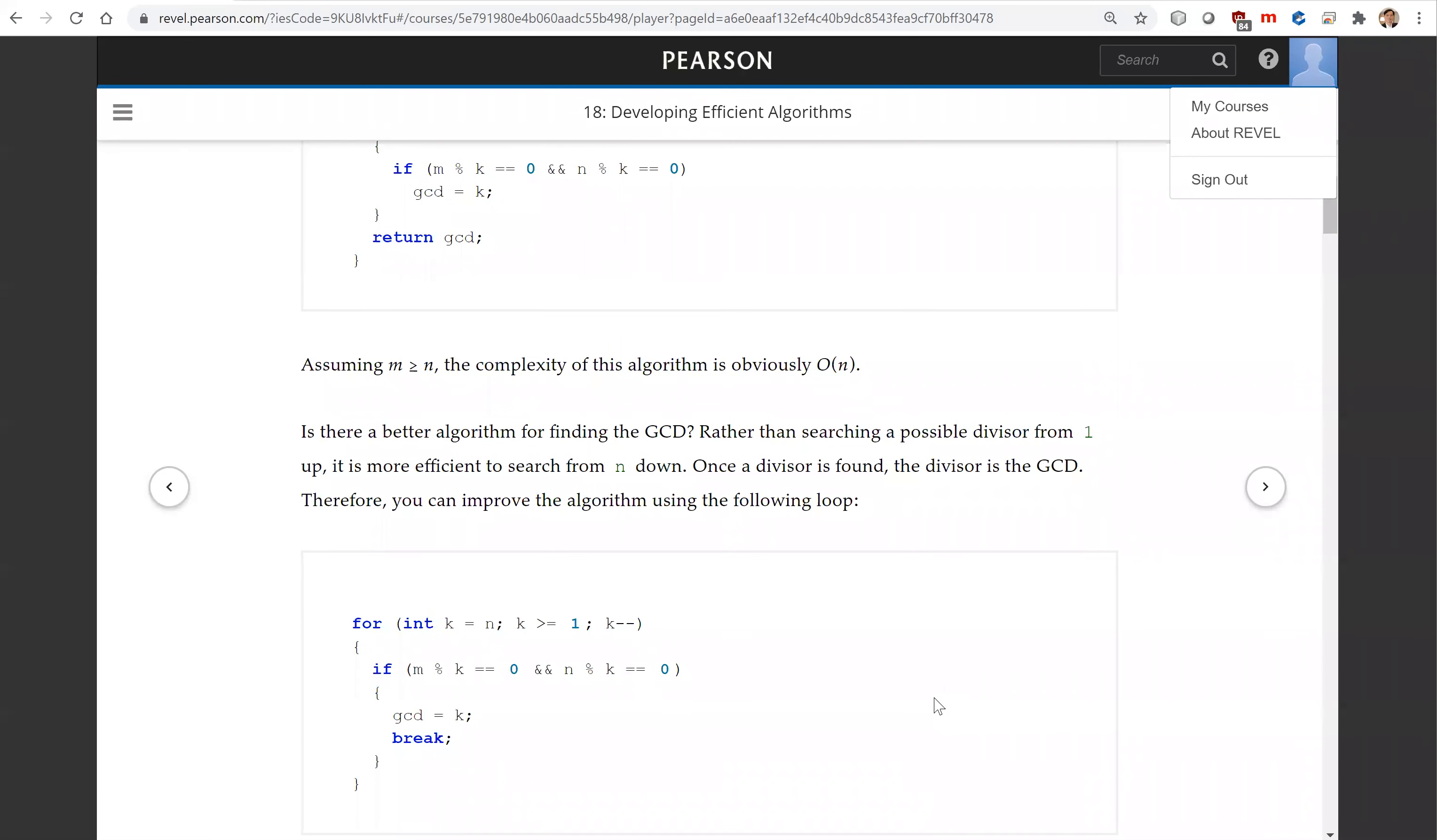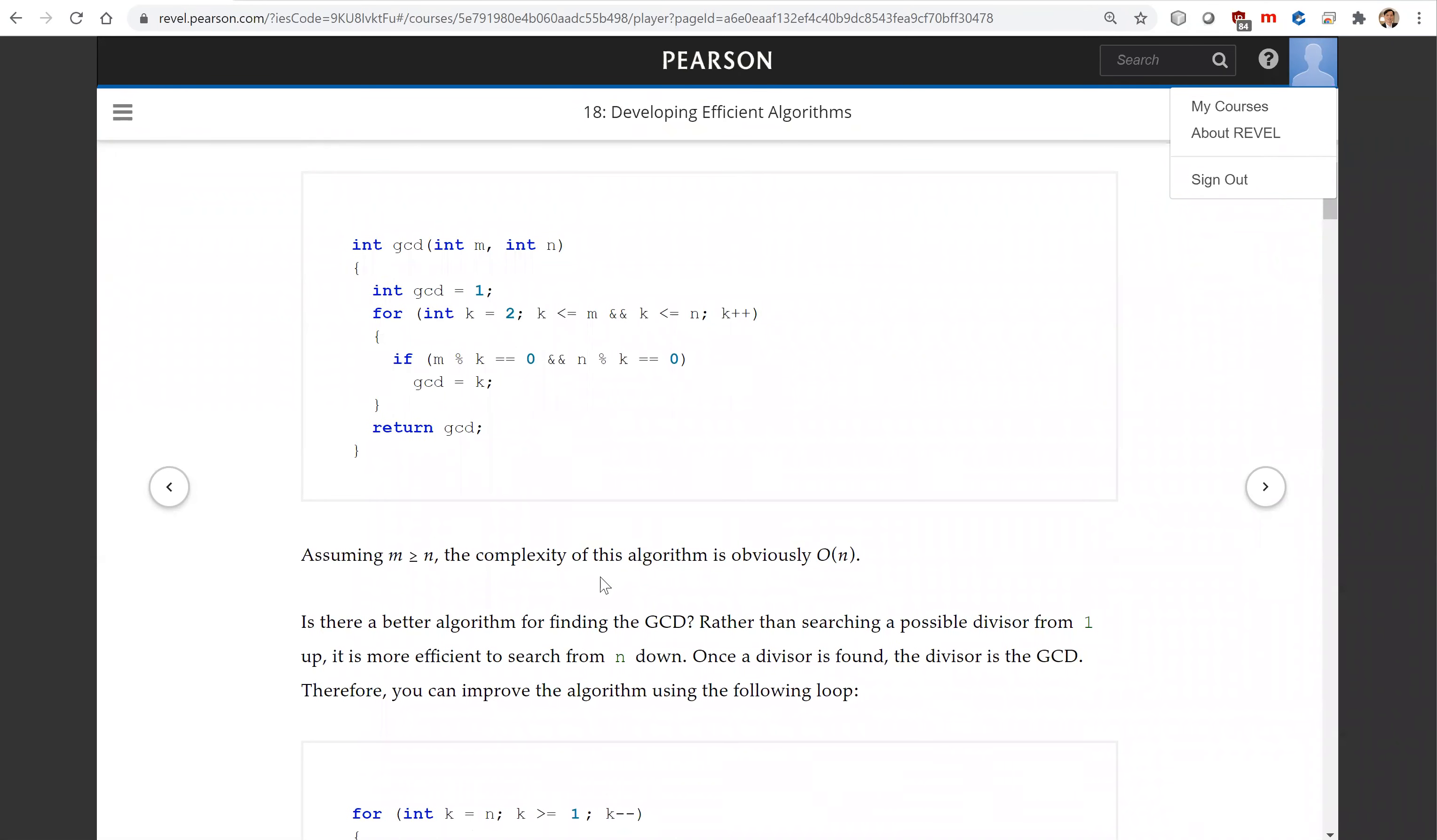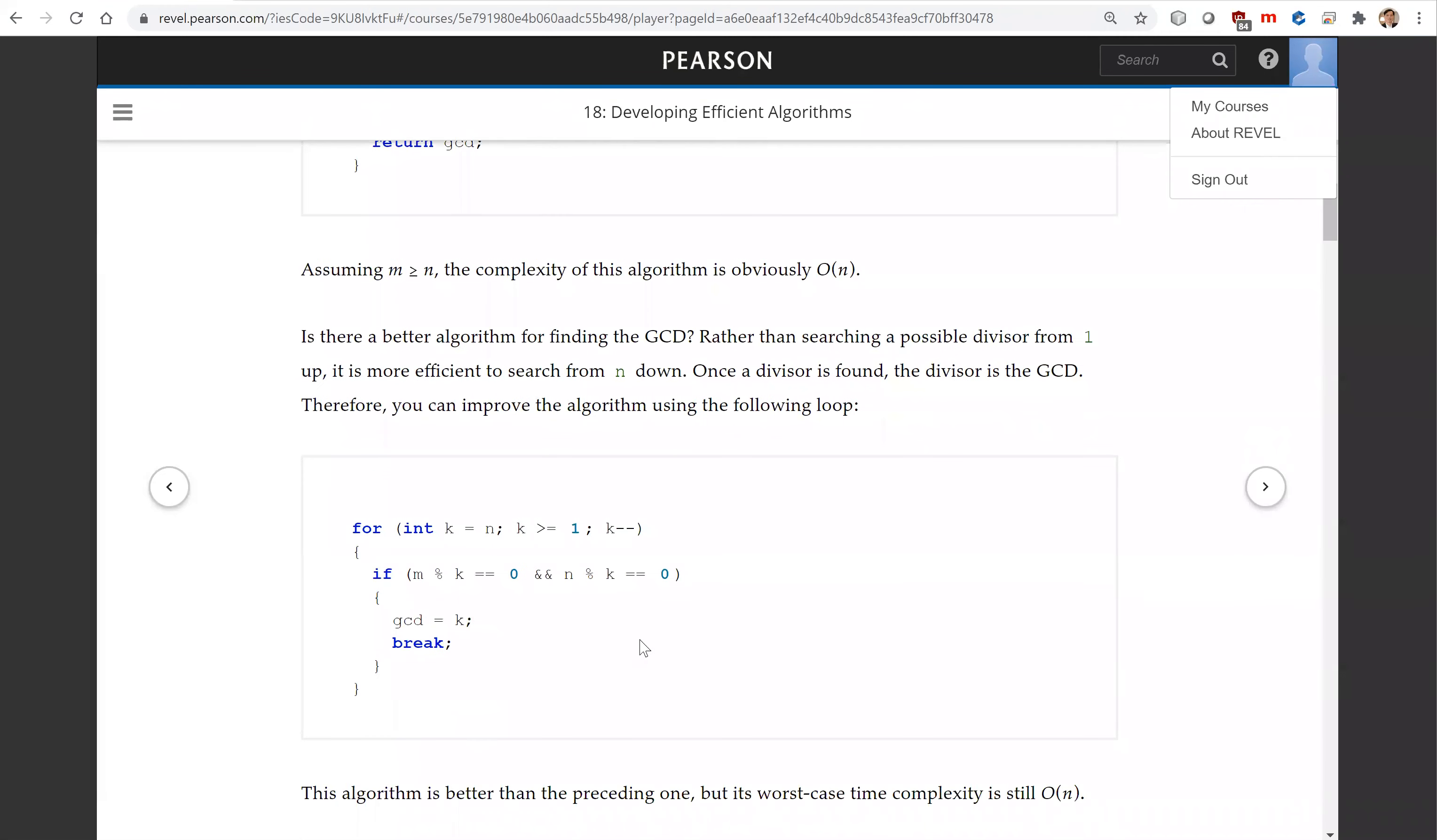Rather than starting from K equals 2, we're going to start K from N going down. This way, whenever you find a divisor, the first one has to be the largest one. This is a slight improvement. You can stop quickly, and once you find one, you don't have to go on. Once you find a common divisor, that's the greatest common divisor.